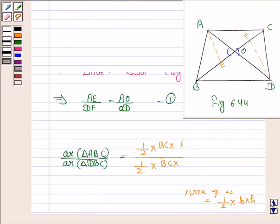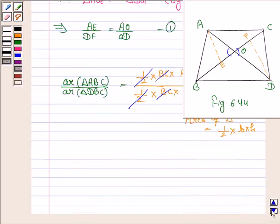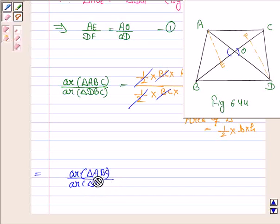Now, 1 by 2 gets cancelled with 1 by 2, BC gets cancelled with BC, and we have the ratio of area of triangle ABC to area of triangle DBC equals AE upon DF.